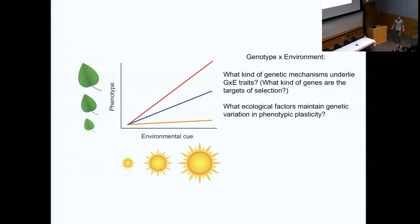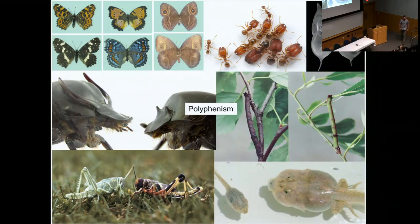There are a lot of interesting questions to ask about genotype-by-environment interactions — in particular, what kinds of genetic mechanisms underlie G×E traits? What kinds of genes are the targets of selection? And if we have lots of variation in these traits in natural populations, what's maintaining this genetic variation? We're going to look at the ecology of one of these traits.